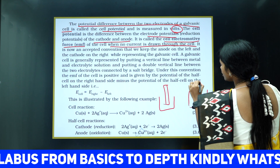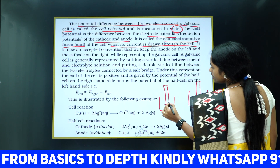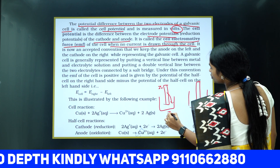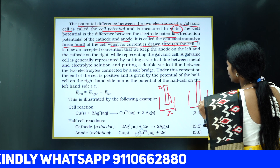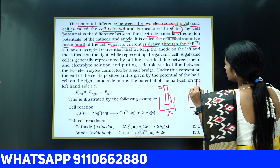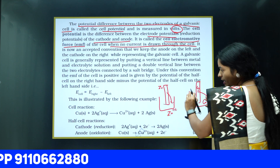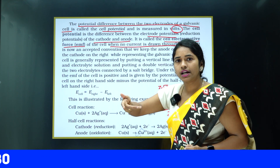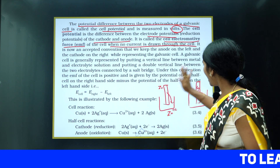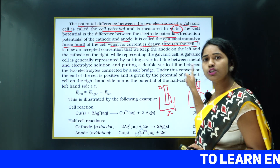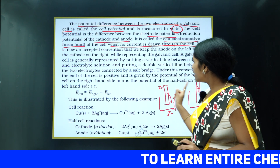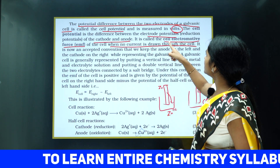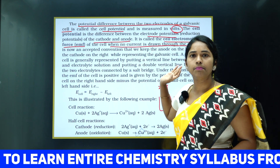Zinc rod is placed in zinc sulfate, copper rod is placed in copper sulfate. Zinc is converted into Zn²⁺ and comes into the solution; Cu²⁺ ions go and deposit as Cu. During this, a charge difference is created in both electrodes — that charge difference is called the potential difference. The difference between these two potentials is the cell potential, and when no current is drawn from this, we call it the EMF, the cell electromotive force.